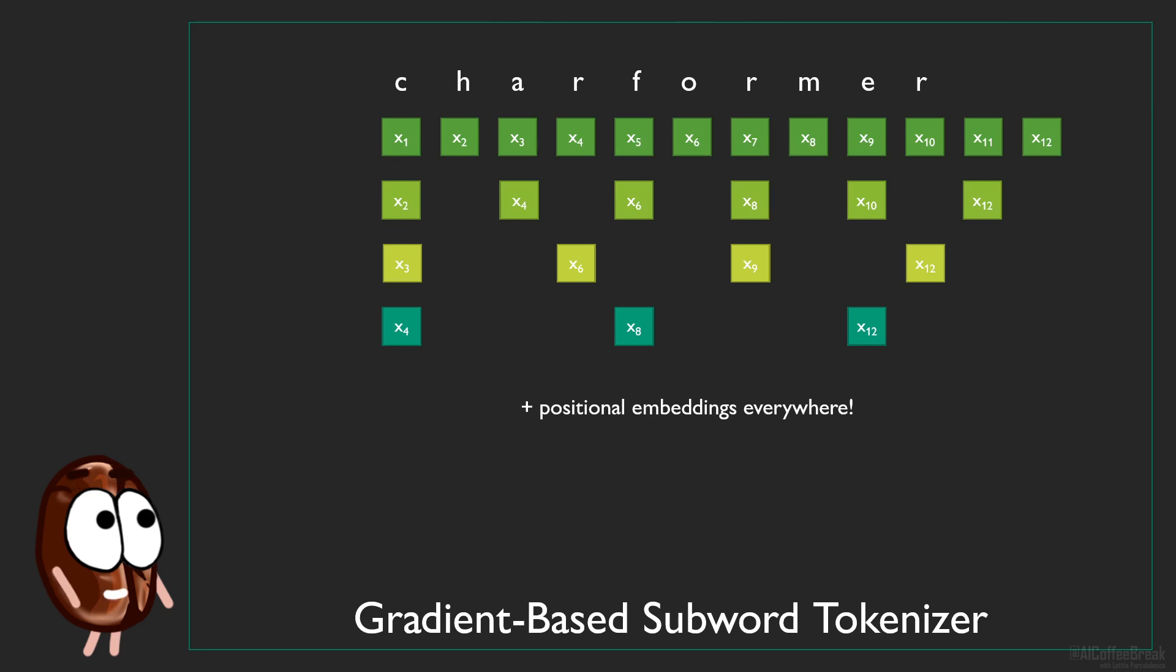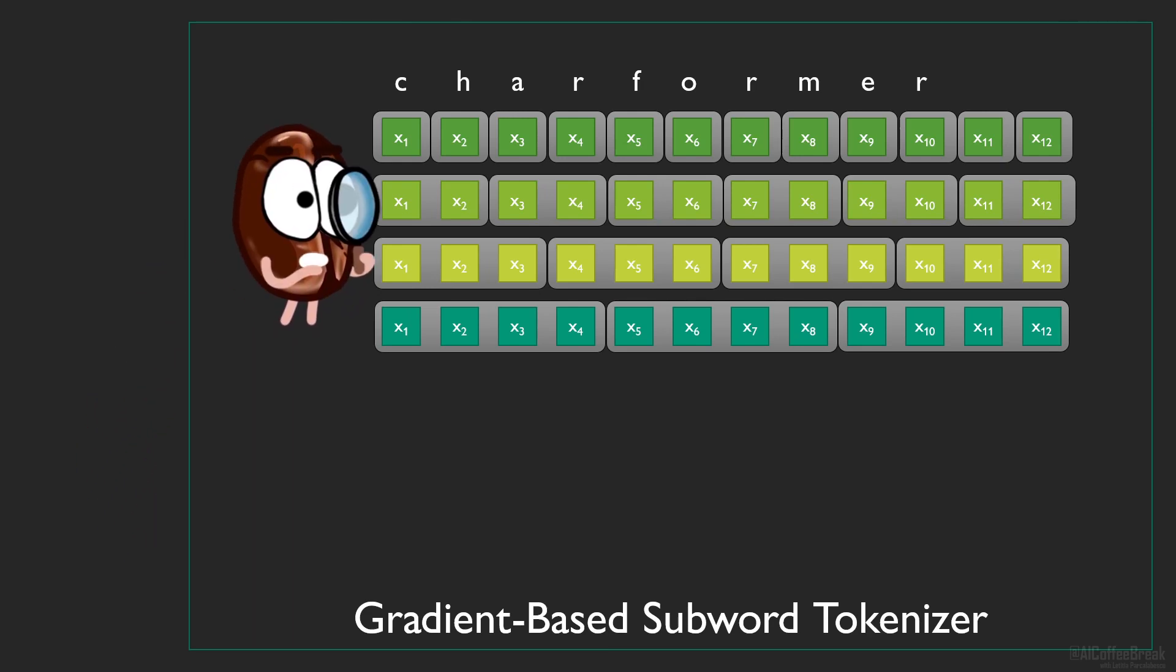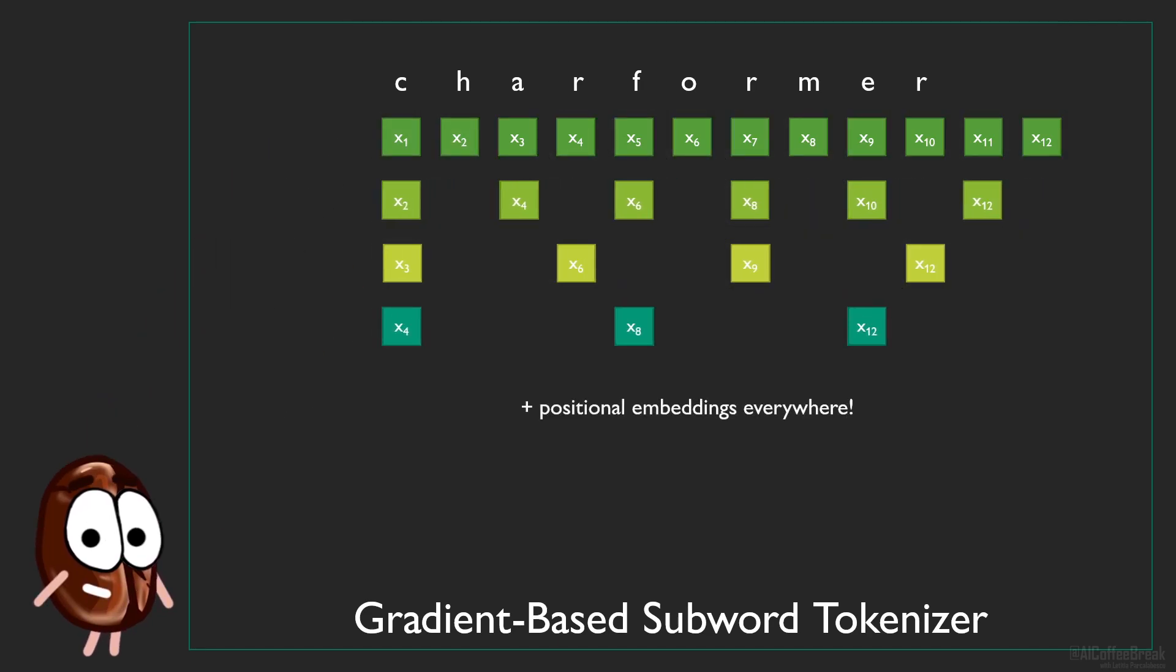Note that for bigger block sizes we have fewer vectors than the number of characters, so the mean pooled representation of each block is repeated now, such that every character has one vector assigned to it. So here x1 equals x2, because x2 is just copied from x1 for the 2-grams or 2-blocks. Now, the idea is to get a new, better representation for each character.